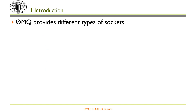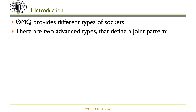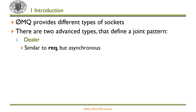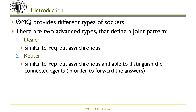ZeroMQ provides different types of sockets: req-rep, push-pull, pub-sub, etc. There are two advanced types that define a joint pattern: dealer and router. The dealer socket is a replacement for req sockets, so it's intended for client processes, but it's asynchronous. And the router socket is a replacement for rep sockets, so it's intended for server processes, but it's asynchronous.